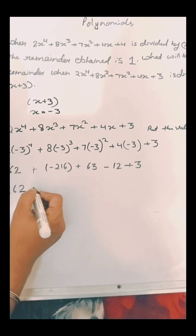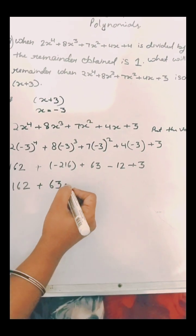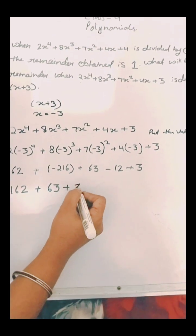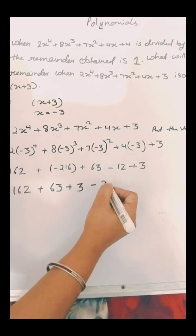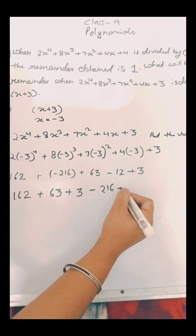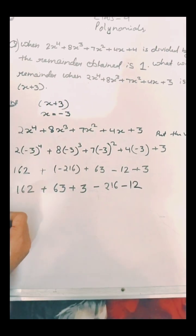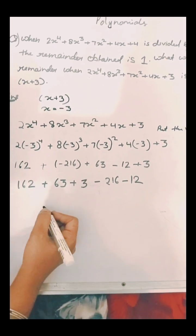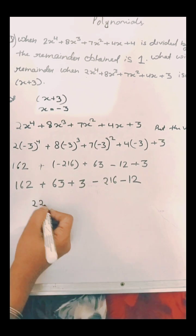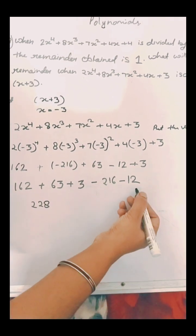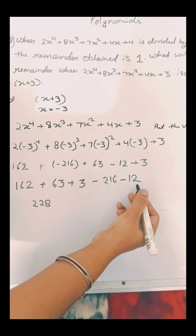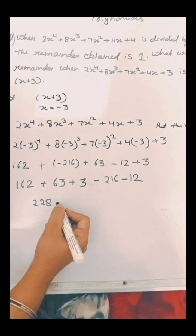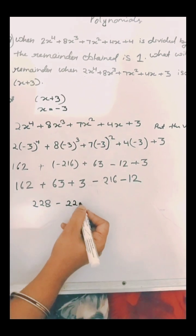Firstly we will write positive numbers: we have 162 plus 63 plus 3, and in negative minus 216 minus 12. So by adding 162 plus 63 plus 3 we will get 228, and by subtracting 216 and 12, we will also get minus 228.